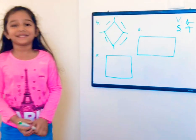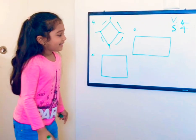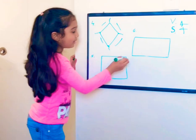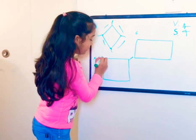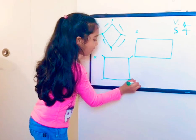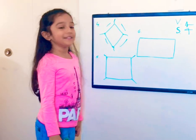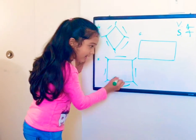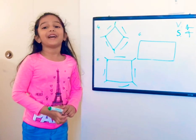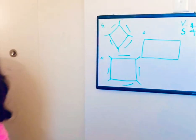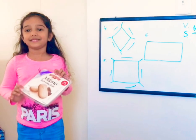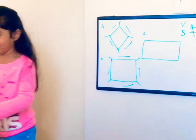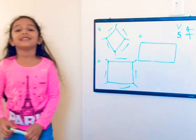Next is square. Let's count the square's vertices and sides. One, two, three, four — it has four vertices. And one, two, three, four — it has four sides. This lid is the same shape as a square.